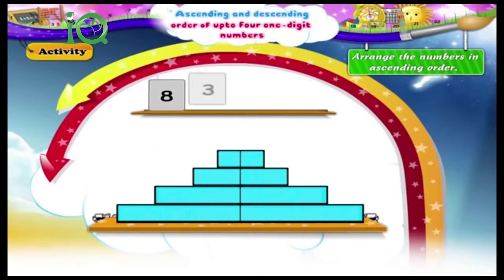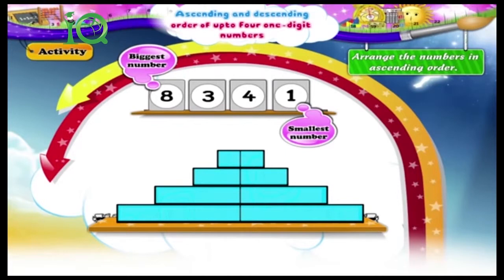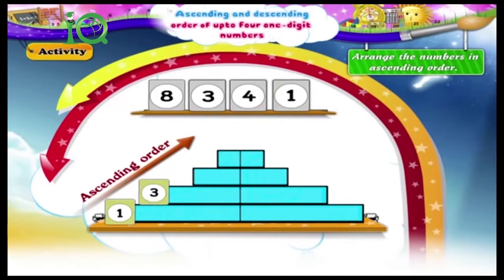Eight, three, four, one. Here the smallest number is one and the biggest number is eight. Between four and three, three is the smaller number. The numbers in ascending order are one, three, four, eight.